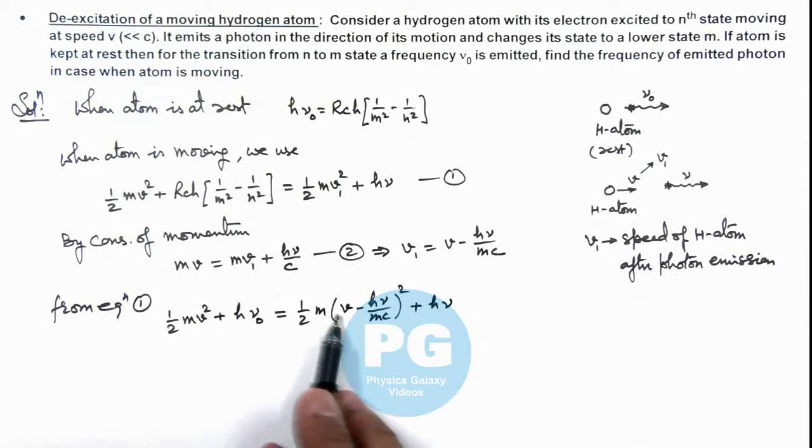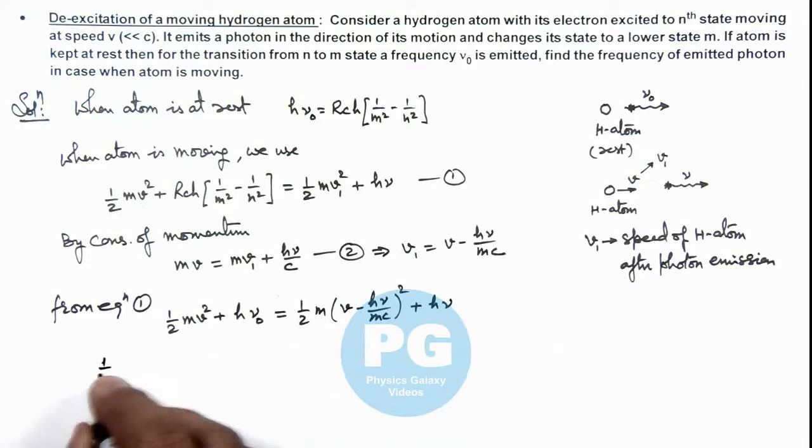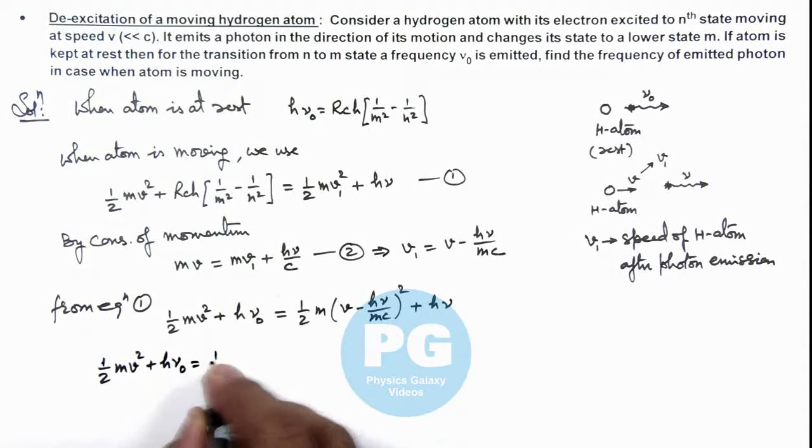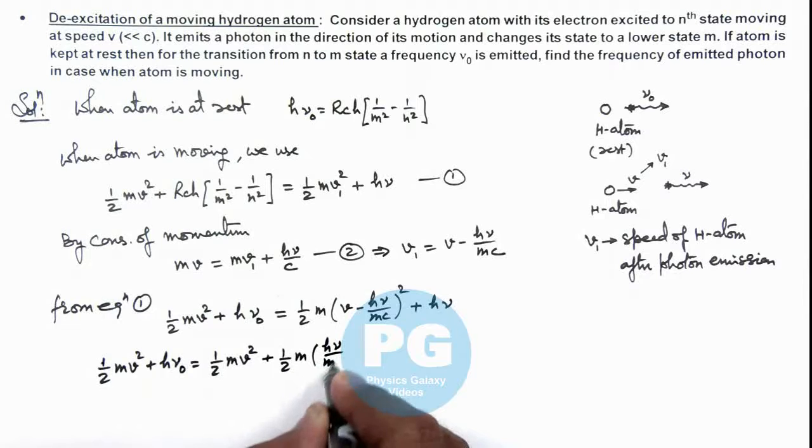Further if you open this expression you can see (1/2)m*v^2 gets cancelled out. Let's open it now. This (1/2)m*v^2 plus h*nu_0 is equal to, this gives us (1/2)m*v^2